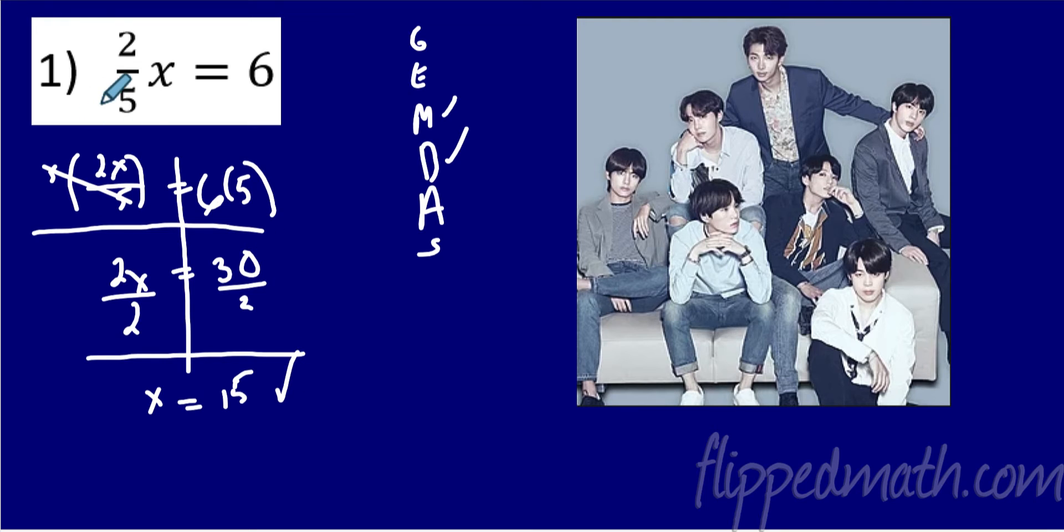And we get down here and we have x is 15. So instead of saying I'm just multiplying by 2 fifths, I want you to think about that as multiplying by a number on top and dividing by a number on the bottom.